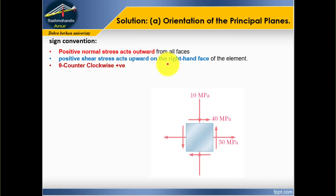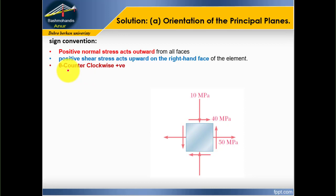Positive shear stress acts upward on the right-hand face of the element. If we look at the right-hand face of this element, any shear stress acting upward is considered positive; downward is negative. Also, any angle counter-clockwise is considered as positive.